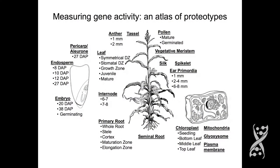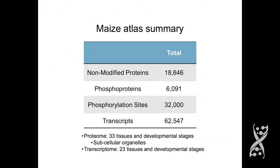To make this atlas, we sampled all the major tissues of maize, including the seed, at several stages of development. We also, with collaborators, have characterized a number of subcellular organelles, though I won't have time to talk about that. This is just an overview of the data. The numbers refer to the genes — not proteins or transcripts per se — but genes from which we identify and measure proteins, phosphoproteins, or transcripts.